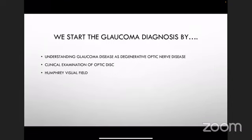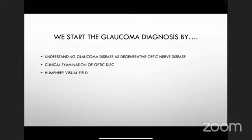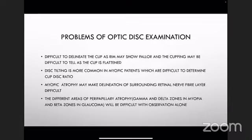In our traditional understanding, we start glaucoma diagnosis by first recognizing that glaucoma is a degenerative and progressive optic neuropathy. We usually begin by measuring intraocular pressure and examining the optic disc for features suggestive of glaucomatous change. In earlier studies, we used the Humphrey visual field as a diagnostic criterion. But each of these has problems when dealing with myopia patients.